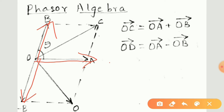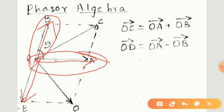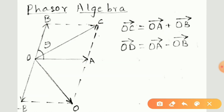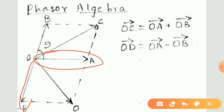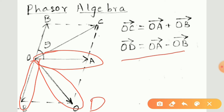If we need to add the two vectors OA and OB, we obtain a resultant vector. If we need to subtract the two vectors, that is OA and minus OB, we obtain a vector OD, where OD is equal to OA minus OB. The arrow represents that the given quantities are vector quantities.